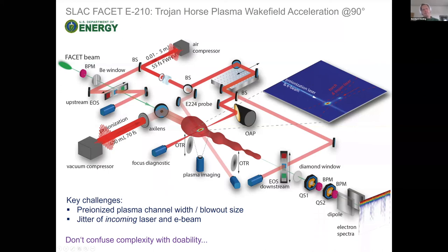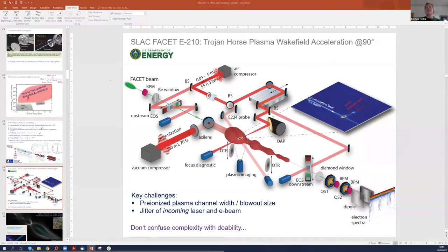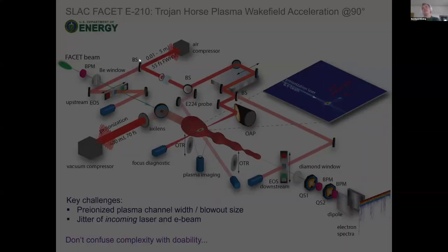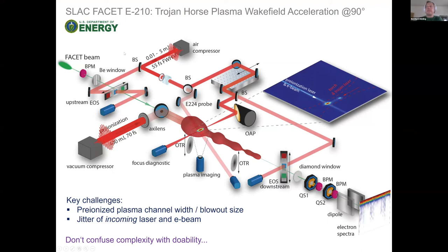Sorry for the Wi-Fi issue — this is the experiment at FACET which we use to demonstrate the feasibility of this plasma photocathode technique. We had the FACET electron beam as the driver of our plasma waves and needed a pre-ionized plasma with a laser pulse. We realized the plasma photocathode in a 90-degree geometry here for various reasons, with the pre-ionized plasma channel as an important bottleneck. Synchronization between beams also plays a role.